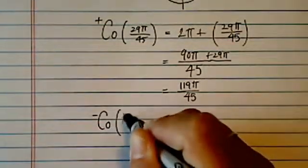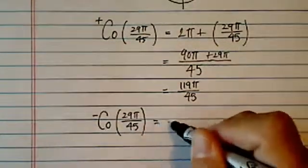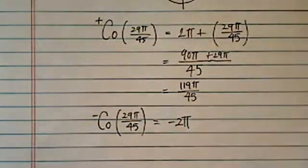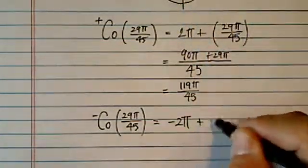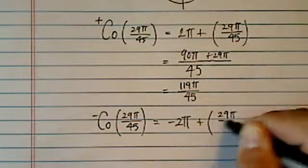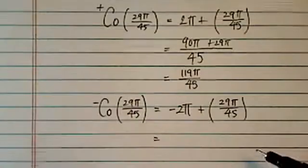Negative is not that different. Negative coterminal, we just add minus 2π. Instead of going positive direction, we want to go around the circle the other way, but we do have to add the angle that we started with, and we'll end up with a negative angle. So that's all they're really looking for.